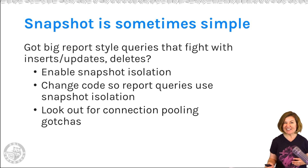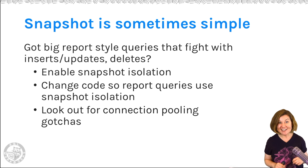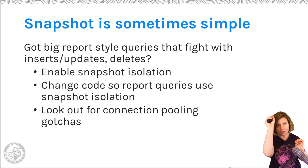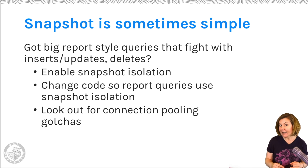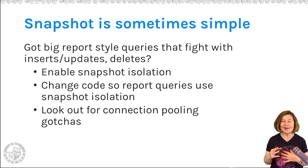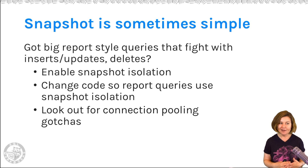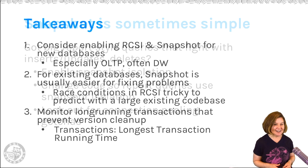Connection pooling is one of the biggest gotchas we haven't mentioned yet. Let's say I have a couple of small parts of my application that are very important and I want to use snapshot, and I'm starting to phase in set transaction isolation snapshot on them. If my application uses connection pooling and I'm not resetting my isolation level, then I might be allowing snapshot isolation for a lot more things than I think. We have to be careful to make sure it doesn't leak out into your connection pooling.